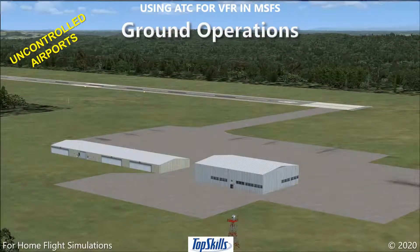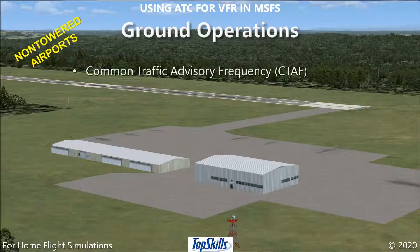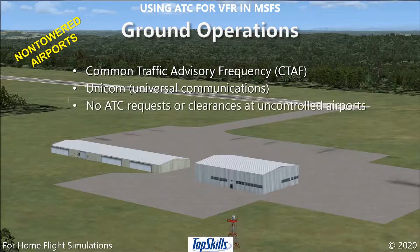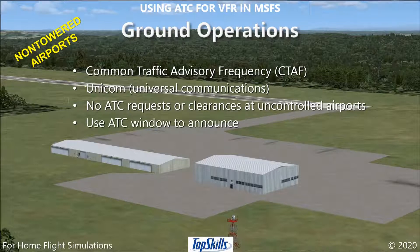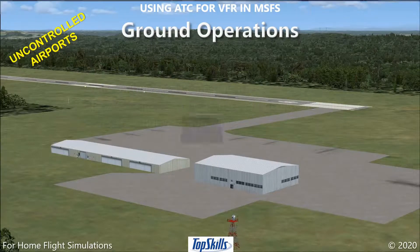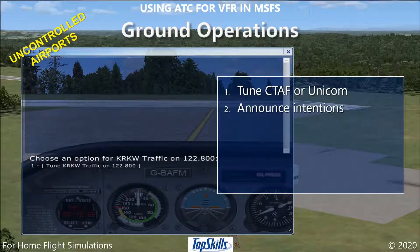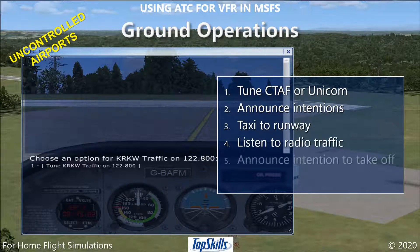At uncontrolled airports, also called non-towered airports, pilots use the common traffic advisory frequency and sometimes UNICOM to announce their intentions to move around the airport. There are no ATC requests or clearances at uncontrolled airports. We still use the ATC window in Microsoft Flight Simulator to communicate at uncontrolled airports. After opening your ATC window, tune the common frequency at your airport, announce your intention to taxi to a runway, then taxi to that runway. Listen to radio traffic, then announce your intention to take off as soon as you are ready, then take off immediately.